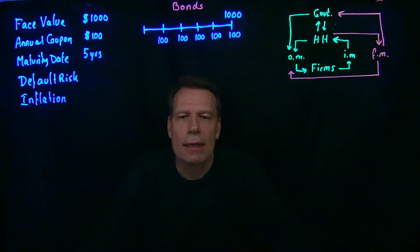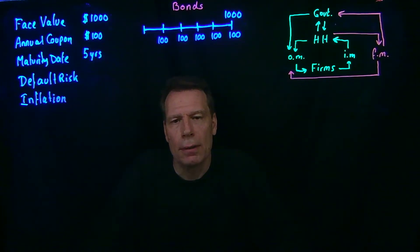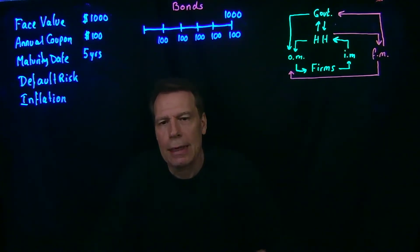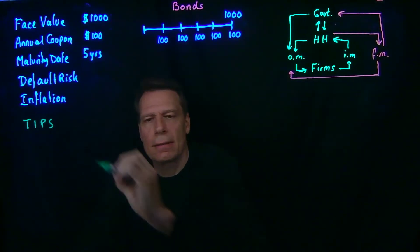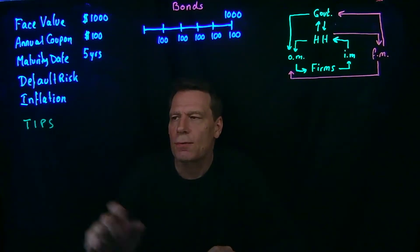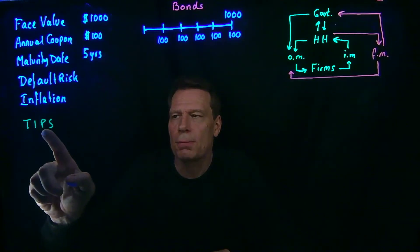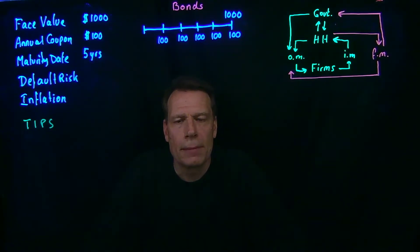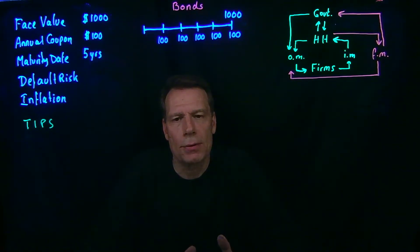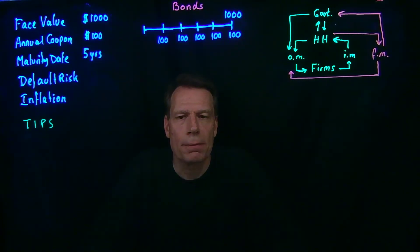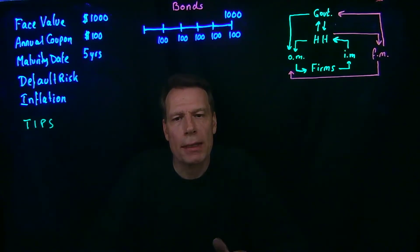Now let's think about a special kind of bond called a TIPS — T-I-P-S — which stands for Treasury Inflation Protected Security. This is a special bond that the U.S. Treasury issues. It's not the only kind of bond it issues, but it is one of the types of bonds issued by the U.S. government. It's special in two ways.